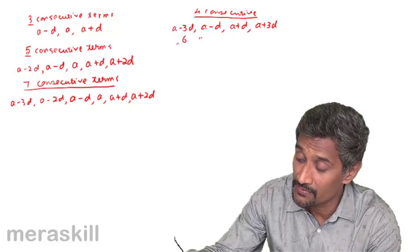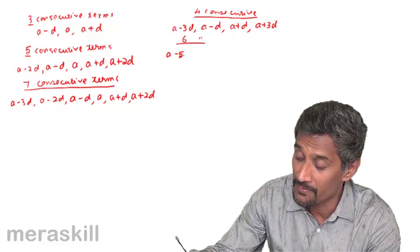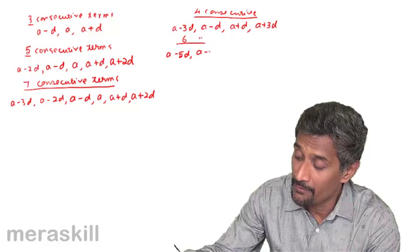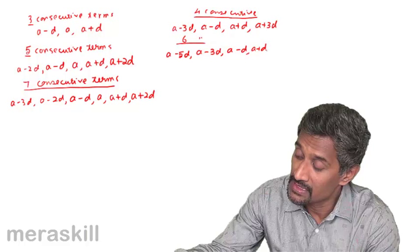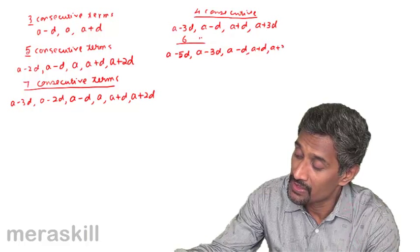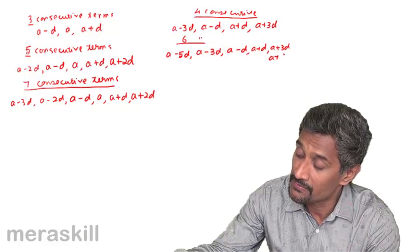Suppose there are six consecutive terms, it will be A minus 5D, A minus 3D, A minus D, A plus D, A plus 3D, and A plus 5D. So accordingly we take the numbers.